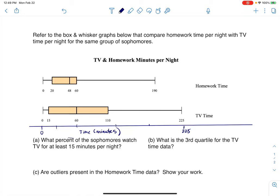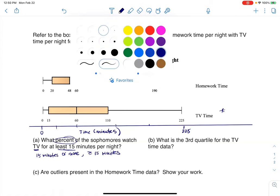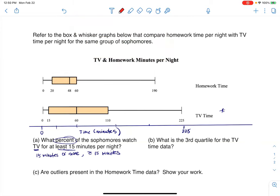So this is what percent, and I want to take note that they're talking about a percentage. What percentage of the sophomores watch TV for at least 15 minutes a night? So if I'm on TV, that means I want to go with this box plot. And it says at least 15 minutes, and at least 15 means 15 minutes or more. Right? Or you could think of it, if you want a math symbol, it'd be greater than or equal to 15 minutes. So let's go to the TV box plot and see what we can find. And let me go ahead and just change my color on my pen. So here is 15 minutes, right?